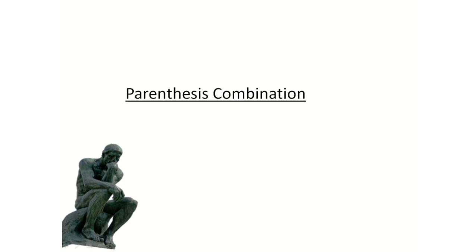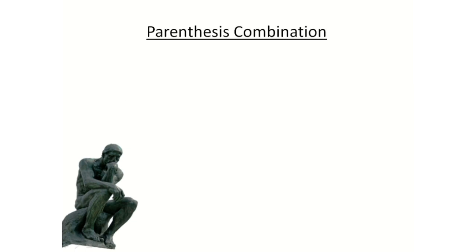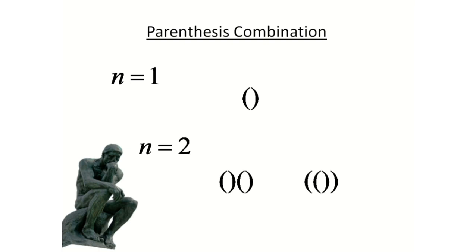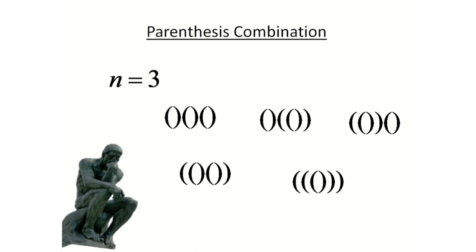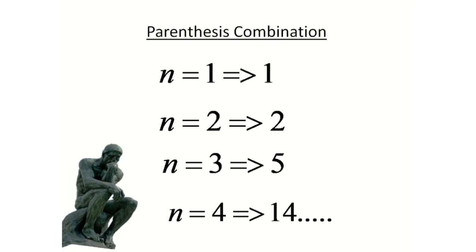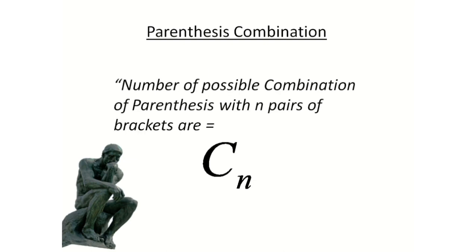Now let's look at the second problem: parenthesis combinations. In this problem, we have to find the number of possible parenthesis combinations with any given number of parenthesis pairs. For n equals 1, meaning 1 pair of parentheses, we have 1 possible combination. For n equals 2, we have 2 possible combinations. If you again observe, these are Catalan numbers, so the number of possible combinations of parentheses using n pairs of brackets is C(n).